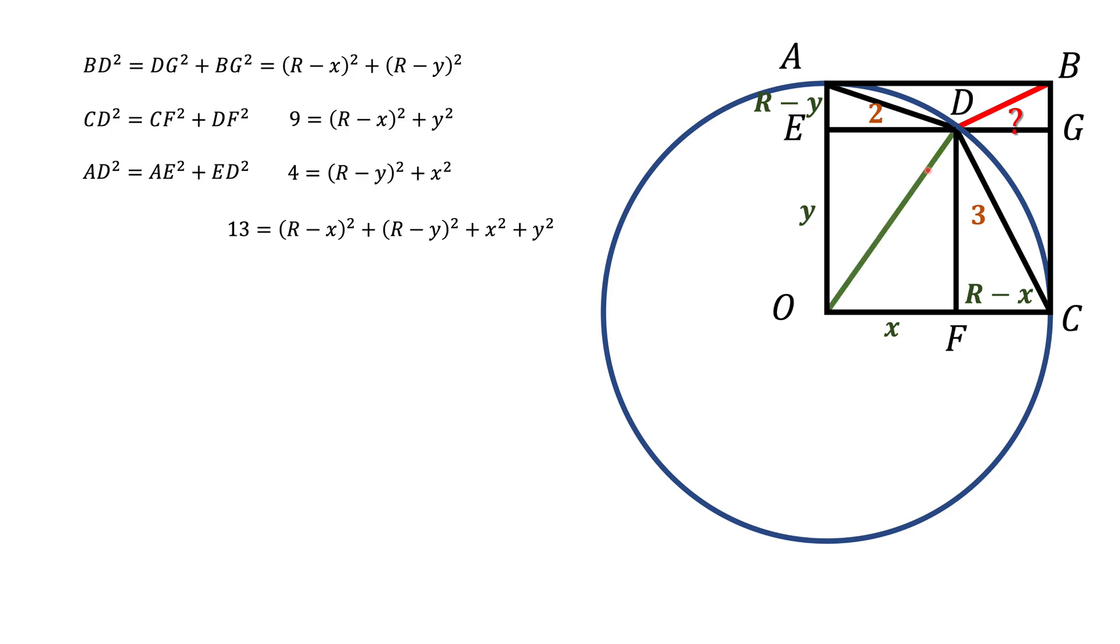And X squared plus Y squared will be actually square of the diagonal of this rectangle. For example, OD. But OD is the radius. Therefore, we see that X squared plus Y squared equals to R squared.